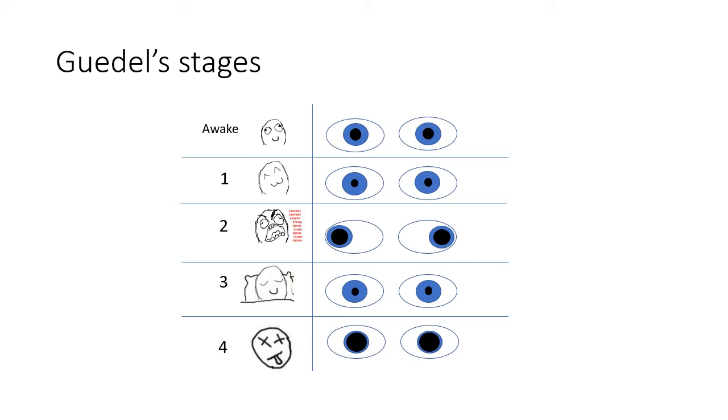It's not necessary to have memorised Guedel's observations. I certainly never did. But it's useful to understand each stage conceptually and to know the eye signs associated with each of them. Specifically, dilated and divergent pupils are pathognomonic for the stage of excitation. And as we discussed before, this is the point at which airway complications are most likely to occur.